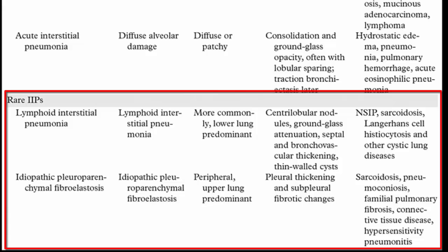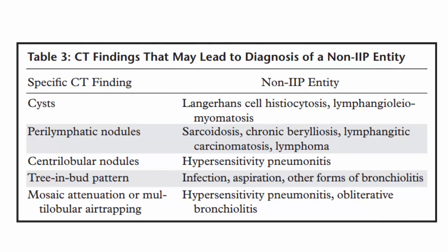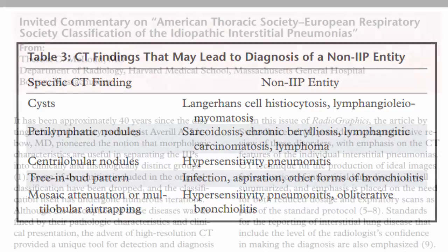The paper includes a table that details the key radiologic features and differential diagnosis of the idiopathic interstitial pneumonias. An important component is the list of CT findings such as the presence of cysts, perilymphatic or centrilobular nodules, tree-in-bud opacities, and mosaic attenuation that would suggest a diagnosis of a non-idiopathic interstitial pneumonia entity.